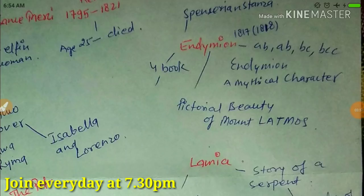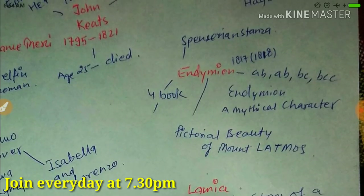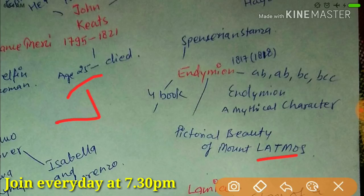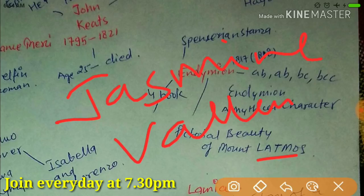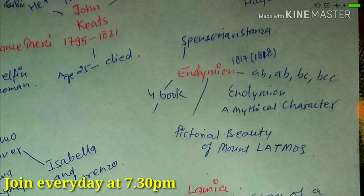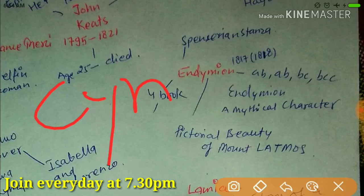He used the pictorial beauty of Mount Latmus — remember Latmus is related to Endymion. The second book of Endymion starts with the search of his dream girl, and he reaches the Valley of Jasmine. In the third book, he discovers Cynthia in the deep ocean.